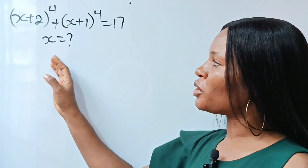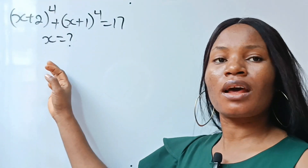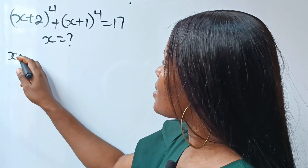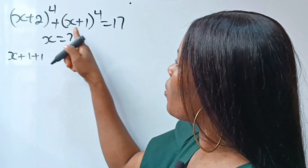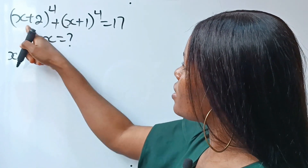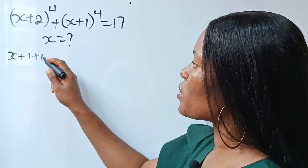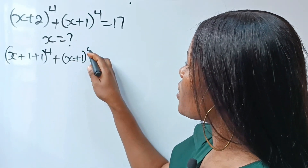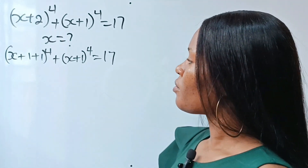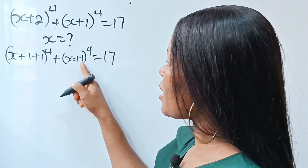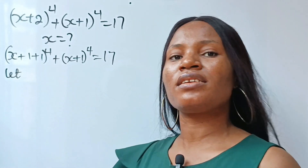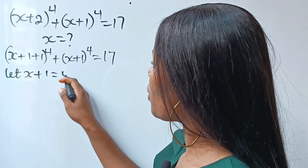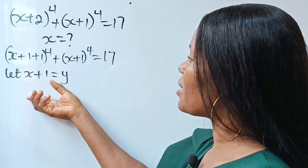Let's solve for the four solutions of this equation. We have x plus 1 plus 1 raised to the power of 4 plus x plus 1 raised to the power of 4 is equal to 17. Since we have x plus 1 repeated, let's simplify by letting x plus 1 be equal to y.